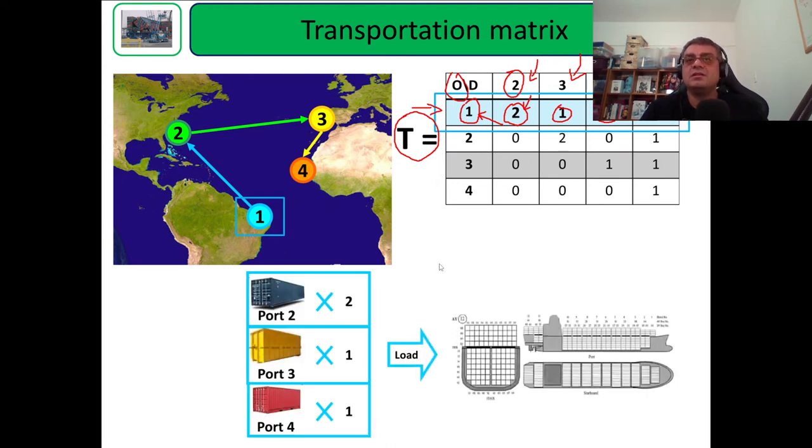Let's see this in a more easy way to see. These four containers should be loaded in port one. As you can see here, we don't have containers with destination port five. We can have it, although we don't show port five here; we can also include it.